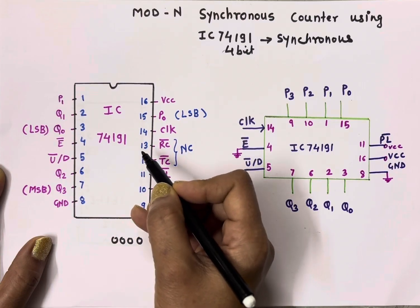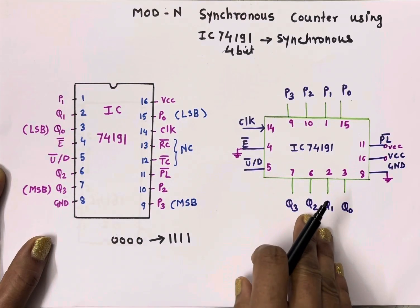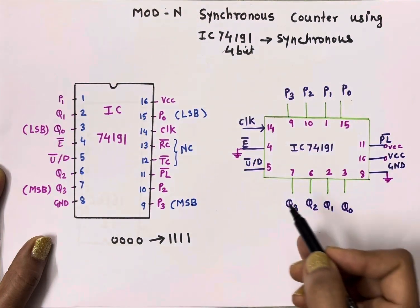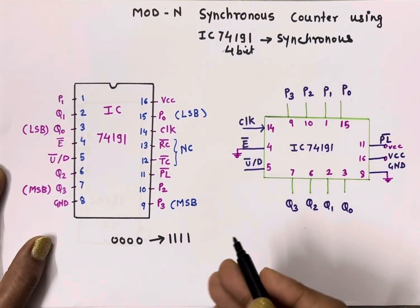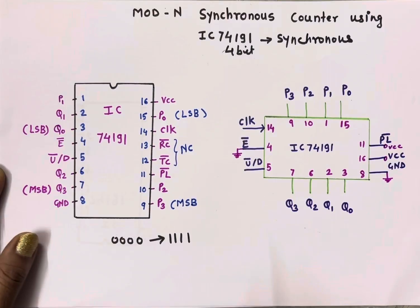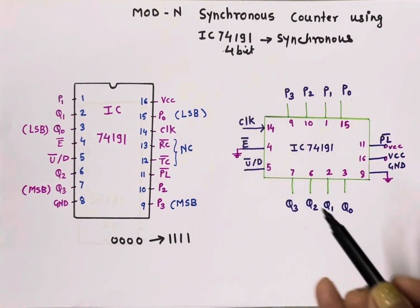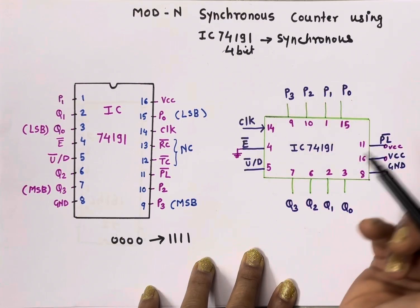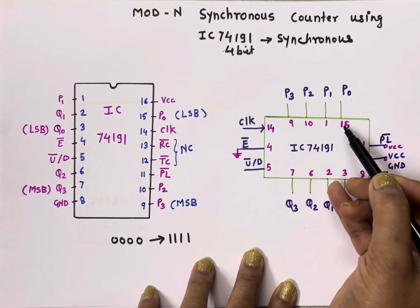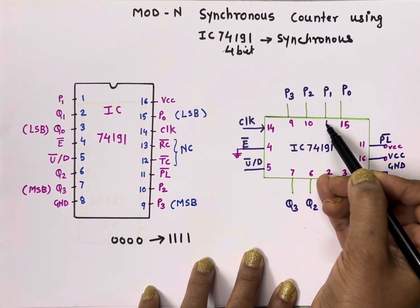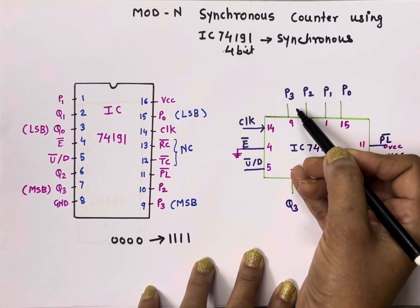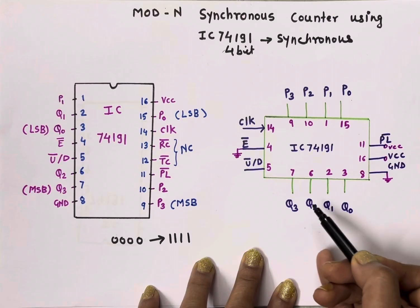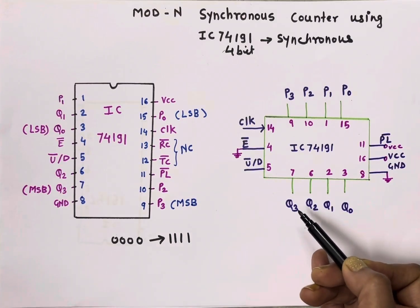Now let's see how to implement up counter and down counter. For P0, the pin number is 15; for P1 it is 1; for P2 it is 10; and for P3 it is 9. These are the four outputs Q0, Q1, Q2, and Q3.